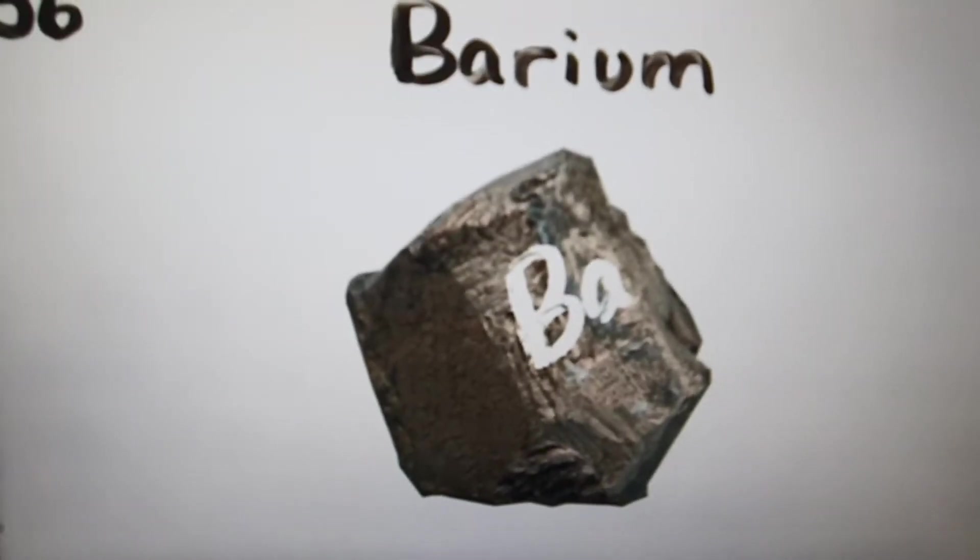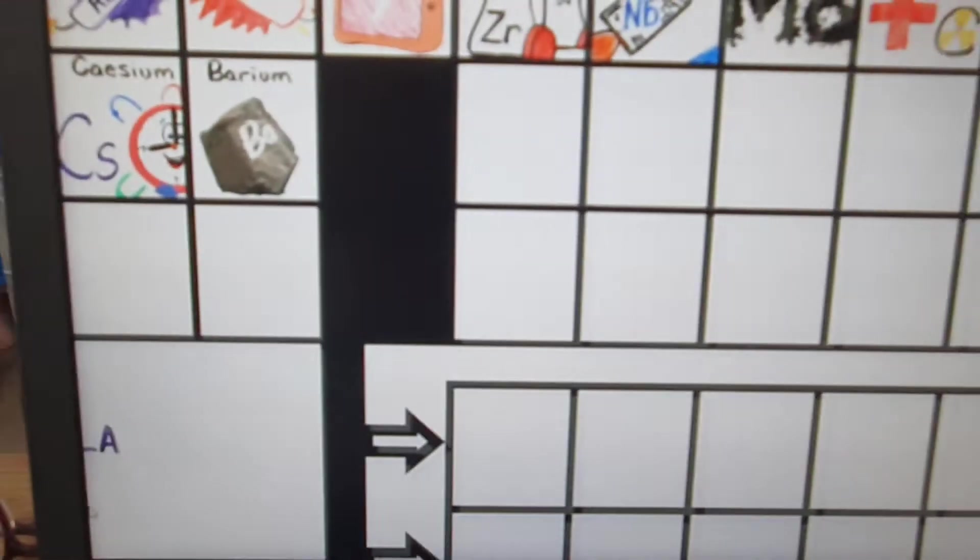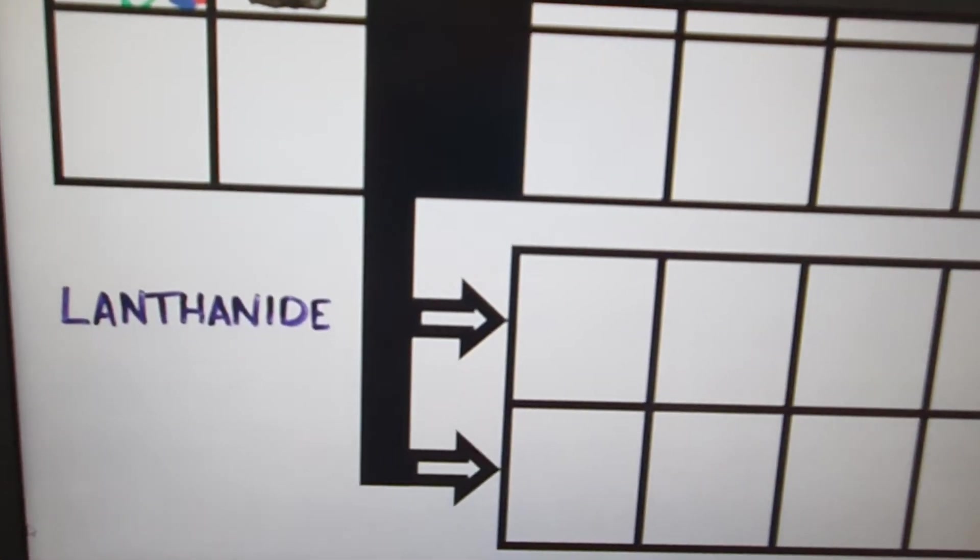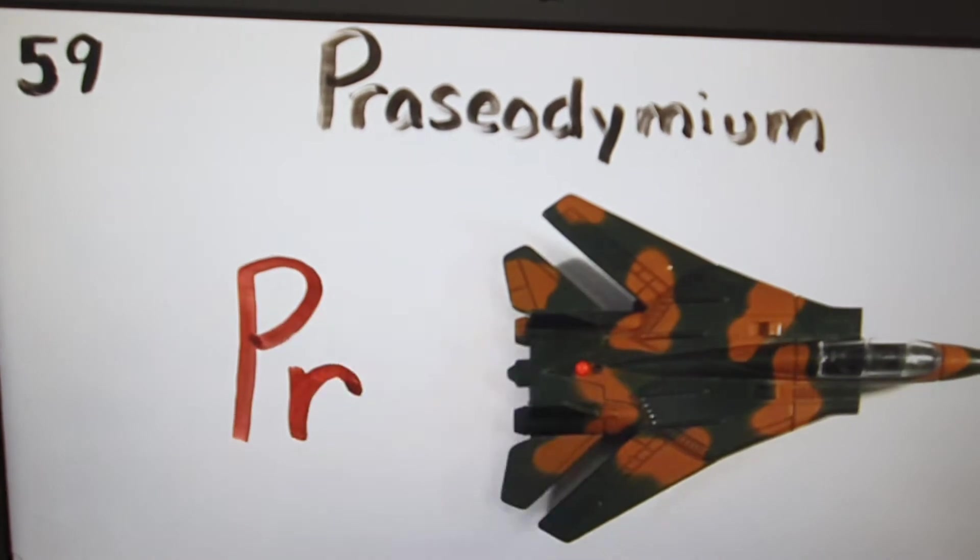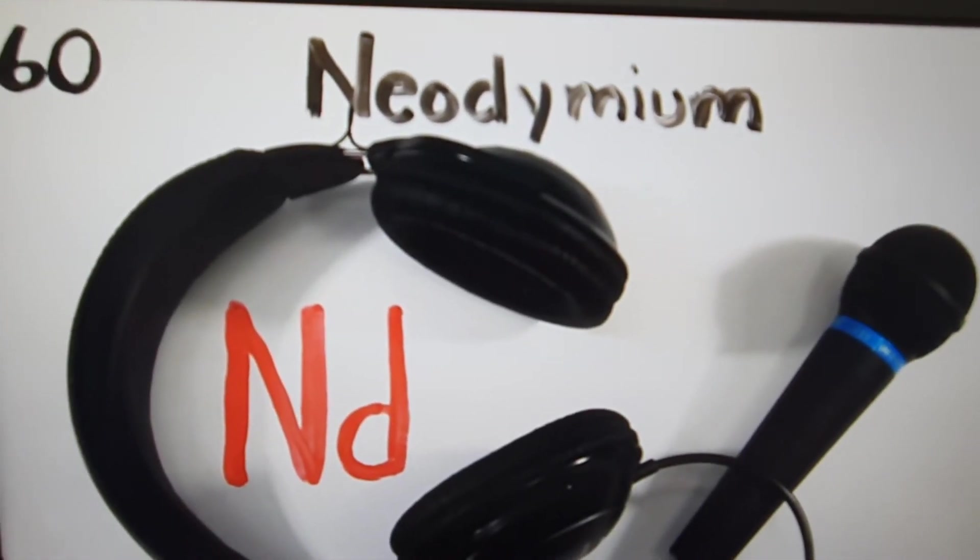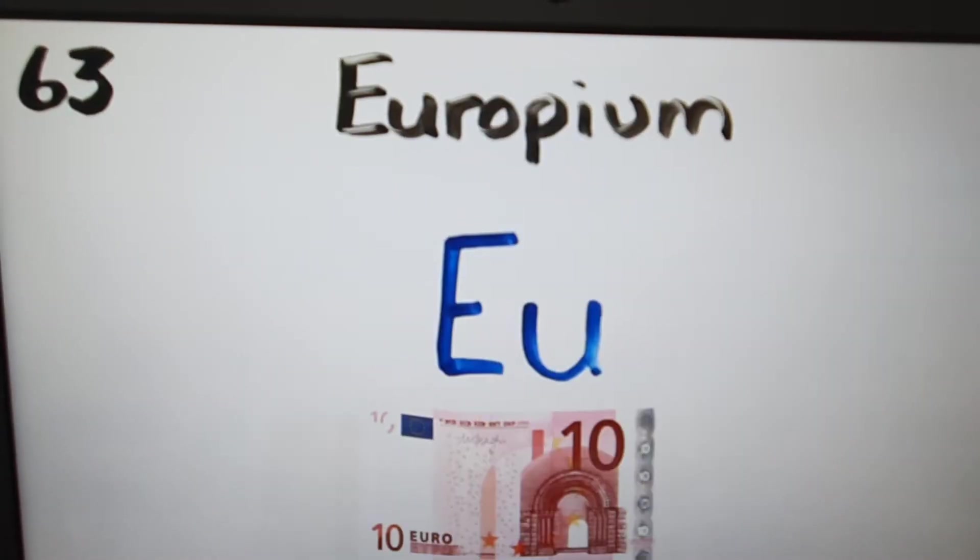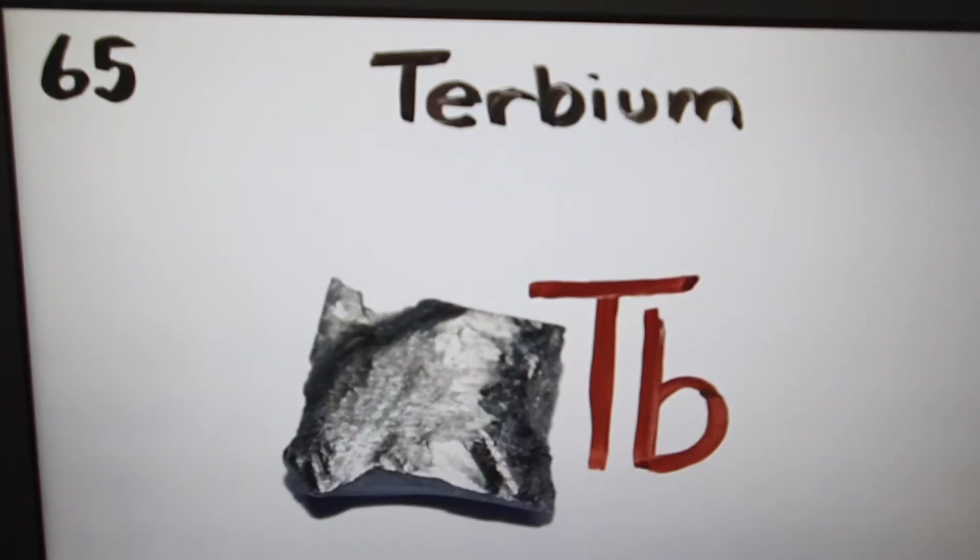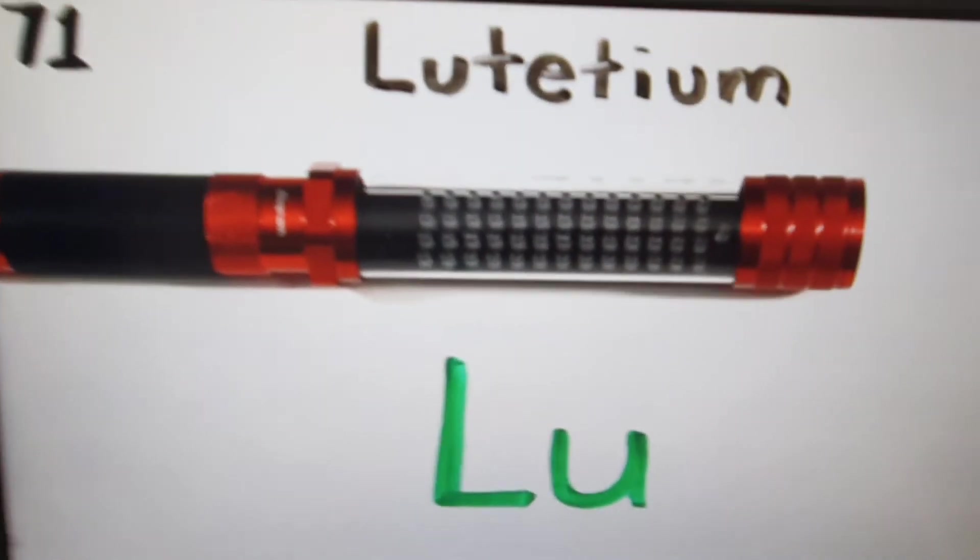And this is where the table splits. Lanthanides have just begun. Lanthanum, cerium, praseodymium, neodymium, promethium, then 62 samarium, europium, gadolinium, terbium, dysprosium, holmium, erbium, lutetium.